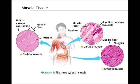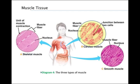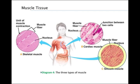Muscle tissue consists of bundles of long cells called muscle fibers. Vertebrates have three types of muscle tissue illustrated in Diagram 4. Skeletal muscle is attached to bones by tendons and is responsible for voluntary movements of the body. Cardiac muscle forms the contractile tissue of the heart. Lastly, smooth muscle is found in the walls of the digestive tract, urinary bladder, arteries, and other internal organs, and is responsible for involuntary body activities such as the movement of food through the intestines.